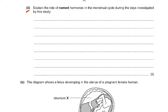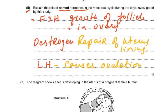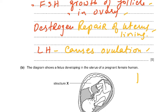Explain the role of named hormones in the menstrual cycle during the days investigated. FSH causes the maturation of the follicle in the ovary. Estrogen causes the repair of the uterus lining. LH increases just at the time of ovulation and results in ovulation — the release of the ovum from the surface of the ovary into the oviduct. You need to discuss FSH, estrogen, and LH.